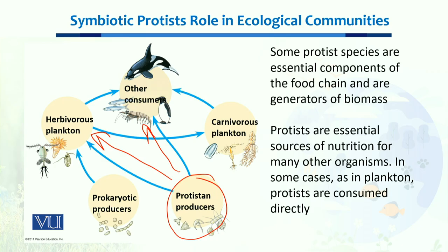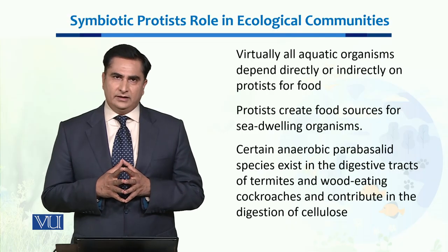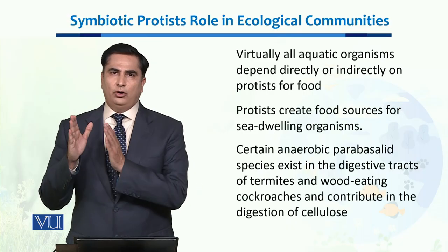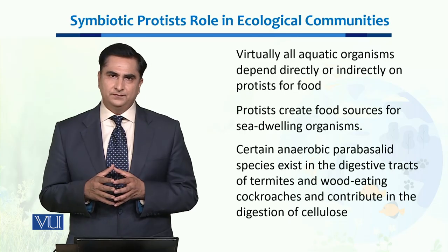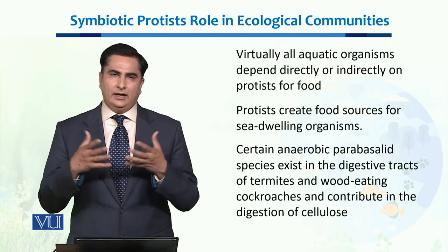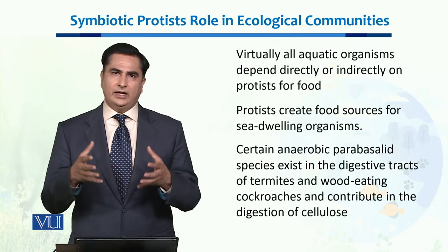Some protist species are a direct component of the food chain and the main generators of biomass in the aquatic environment, while some protists are an essential source of nutrition for many other organisms. Even in some cases, just like in plankton, protists are consumed directly. Virtually all aquatic organisms depend directly or indirectly on protists for their food. Protists are an important part of the food chain, especially in aquatic environments.